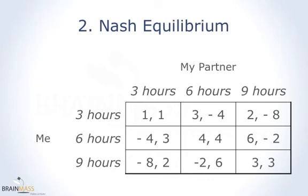Our first topic is the Nash equilibrium. Rather than giving you the definition directly, we'll work it out from the payoff matrix. We'll look at the same matrix where my partner and I are doing a school project. Look at this matrix and try to think: what are our best moves? What strategies will maximize my return, and what will my partner choose to maximize his return?